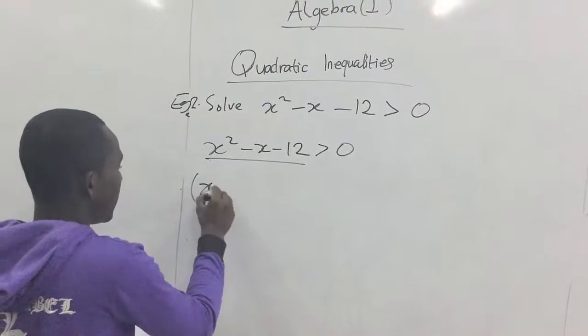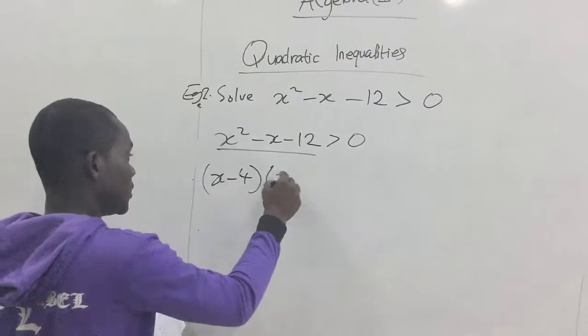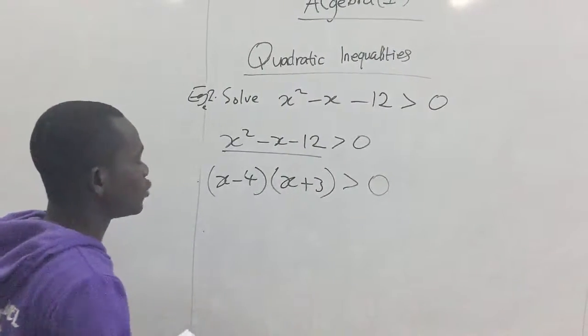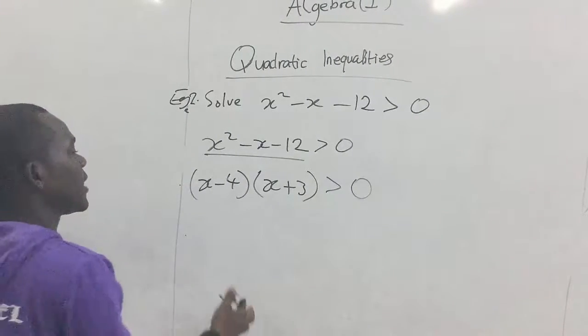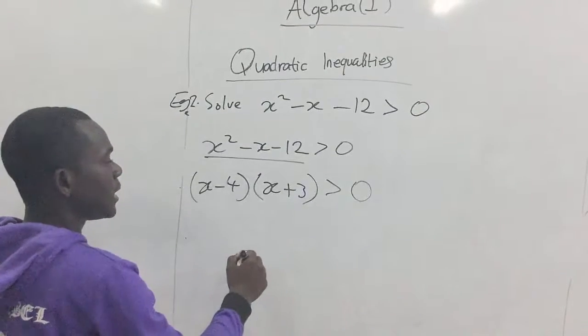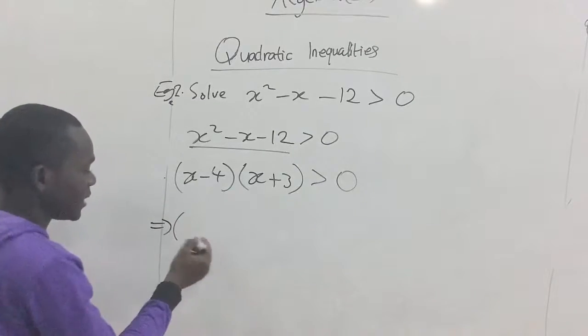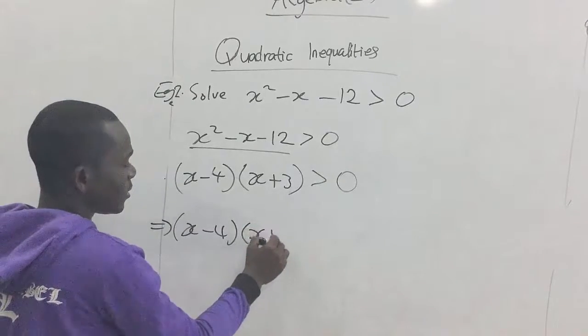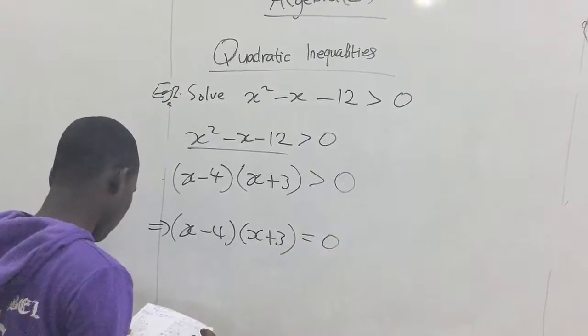So our next step is to draw or sketch a graph where we can scale that graph. When we transform this into an equation, so this again becomes an equation of x minus four, x plus three, equal to zero.